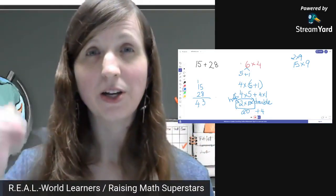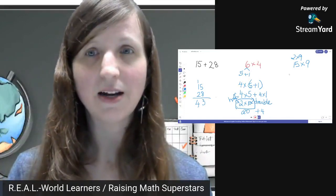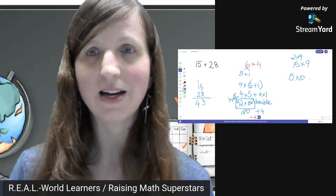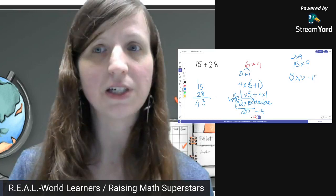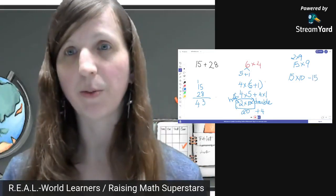And then you get to the point where you can use that same strategy for bigger numbers. So 15 times 9, once they really get the hang of it, you'll get to the point where you do 15 times 10 and then just take off the 15. That's technically 15 times 1. So we're doing the distributive property in action here.